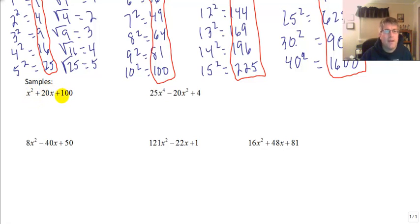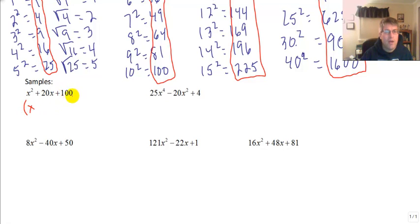Sample problem 1: x squared plus 20x plus 100. We want to factor this. The coefficient on x squared is 1 — a perfect square — and 100 is also a perfect square. The square root of 1 is 1, giving us 1x, and the square root of 100 is 10. Checking the middle term: 2 times 10 times 1 equals 20. It fits the pattern, so this factors to the quantity x plus 10 squared.